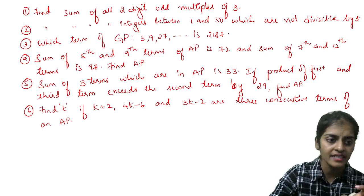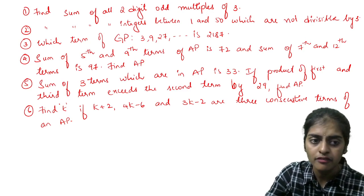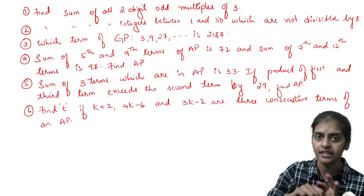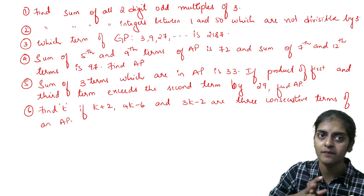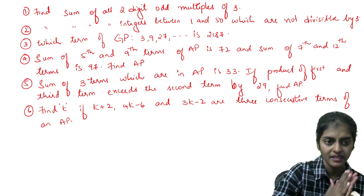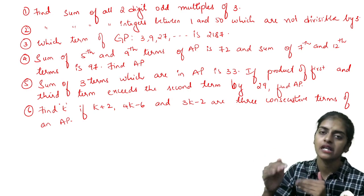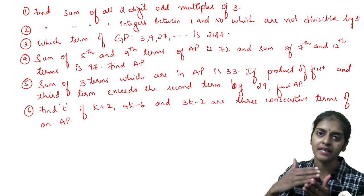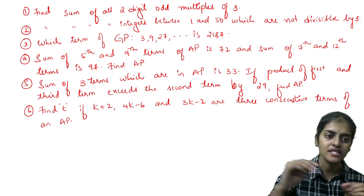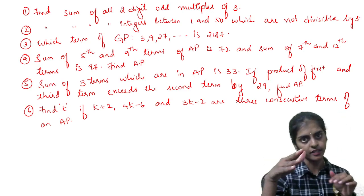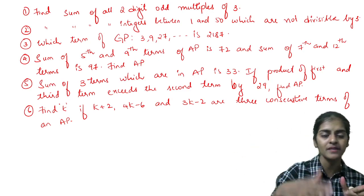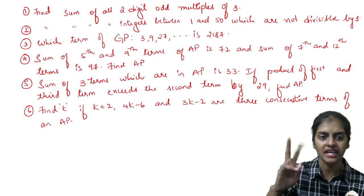Next question: sum of fifth and ninth terms of an AP is 72, and sum of seventh and twelfth term is 97. Sum of fifth and ninth means a5 plus a9 is 72. So a5 means a plus 4d, a9 means a plus 8d. So (a plus 4d) plus (a plus 8d) is 72.